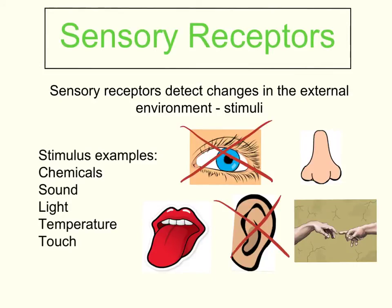Examples of stimuli are things like chemicals, sound, light, temperature, and touch — all things that we can detect using our sensory receptors. As I've explained, those sensory receptors are critical for our survival, because without them we're not going to be able to detect any changes in these sorts of stimuli.